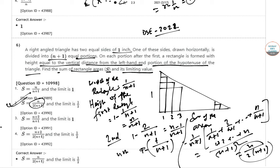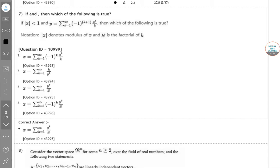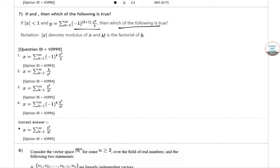Let's go to question number 7. Which of the following is true? If mod x equals 1, y equals this, which of the following is true? For these kind of questions, let's go for the expansion first.